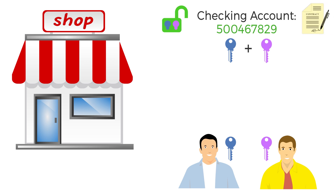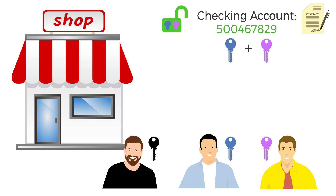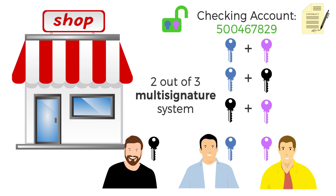An account or document can also be secured by as many digital signatures as needed. For example, if Joe and David bring on Tim as a partner, that account now has three owners. A rule can be created to give access to the account as long as two of the three owners agree. Therefore, one owner can't access the account or unlock the document — at least two owners must agree for it to unlock. This is called a two out of three multi-signature system.